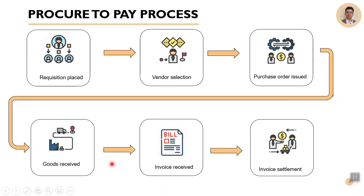It all starts with the requisition process. The requisition can be placed by a department or an employee of the organization, and based on that it goes through a workflow process for approval, rejection, or amendments. The vendor is selected during the workflow process based on quotations, or the vendor can be predefined based on the item selected, which already has an approved vendor attached to it.